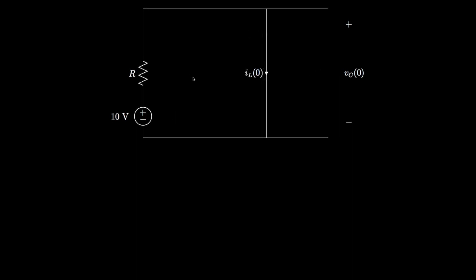At the instant just before the switch is changed, only the 10-volt source and its resistor are in the circuit. Because the 10-volt source is a DC source, the inductor will behave like a short and the capacitor will behave like an open. So at the instant that the switch is closed, because the inductor current and the capacitor voltage have to be continuous and cannot change instantaneously, we'll see no voltage across the capacitor, and the inductor current will be 10 volts divided by the resistance R.